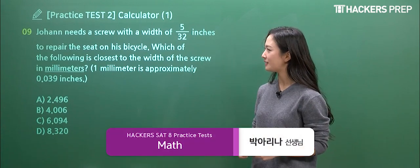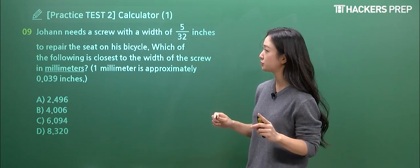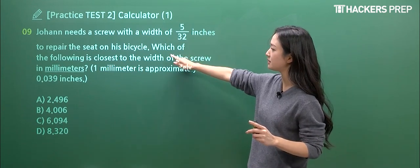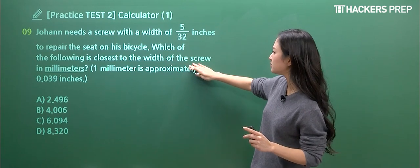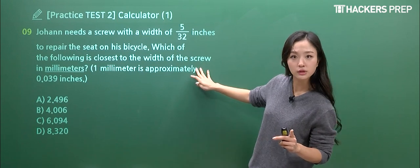Let's move on to question number nine. So we have a person and this person needs a screw with a width of 5 over 32 inches to repair the seat on the bicycle. And they're asking for the closest approximation in terms of millimeters.